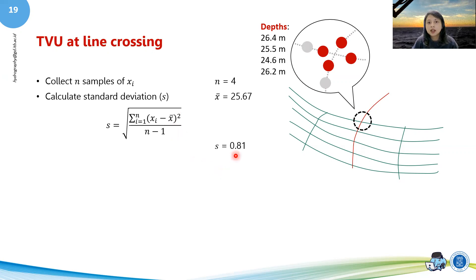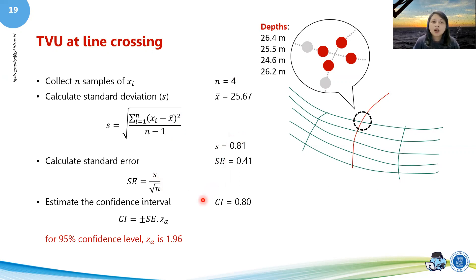Then you calculate the root of it and you will have s. Here the s is 0.81. Then you calculate your standard error with this equation. Your standard error here is 0.41, so your s is 0.81, n is still four, and then you can estimate the confidence interval.